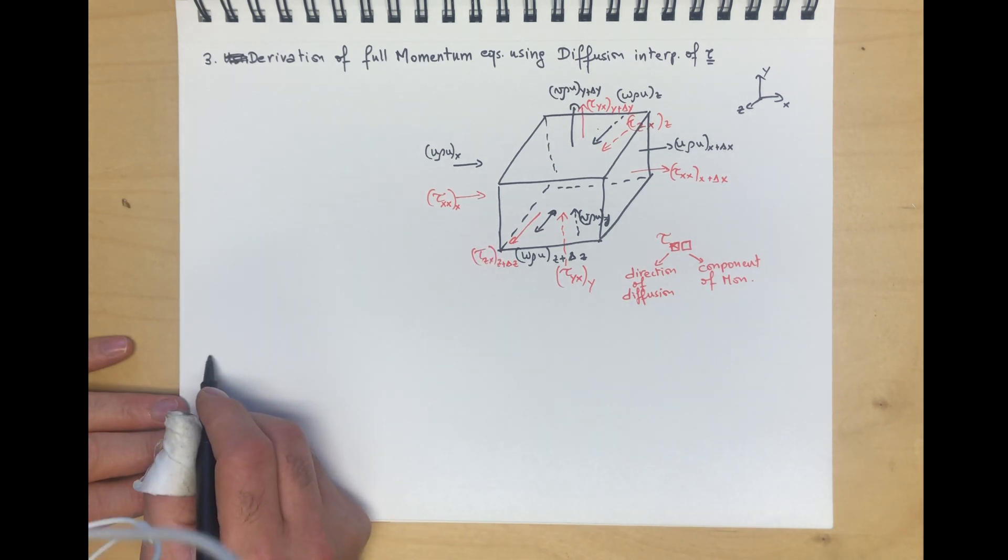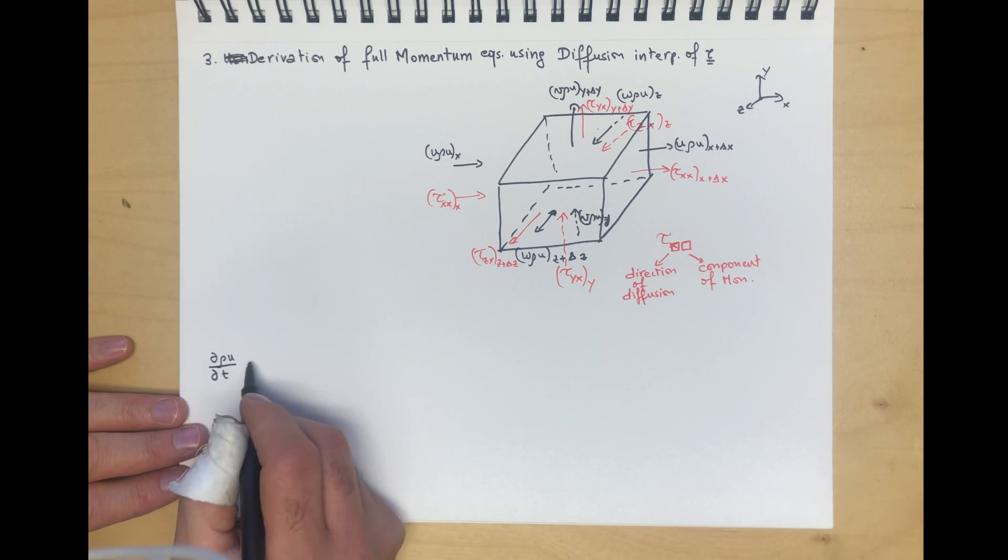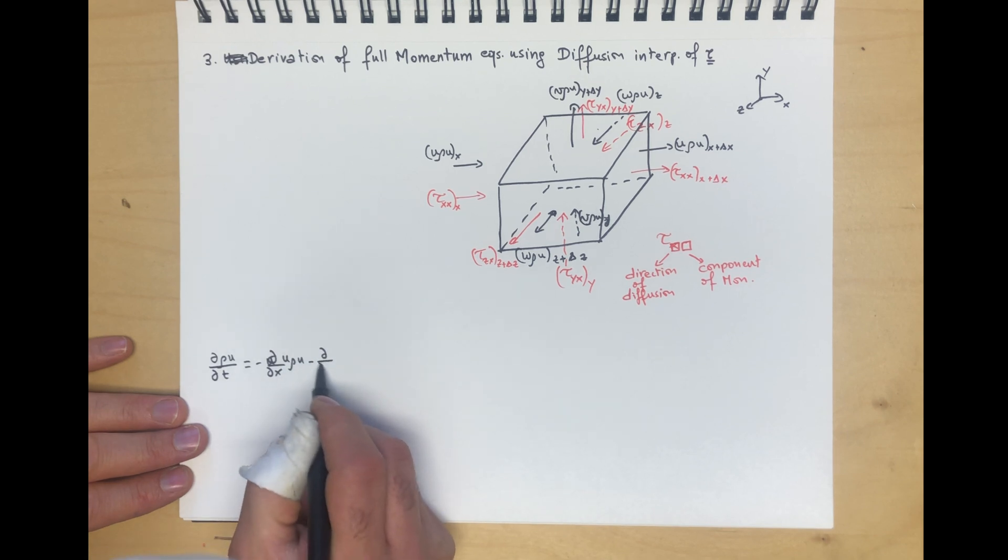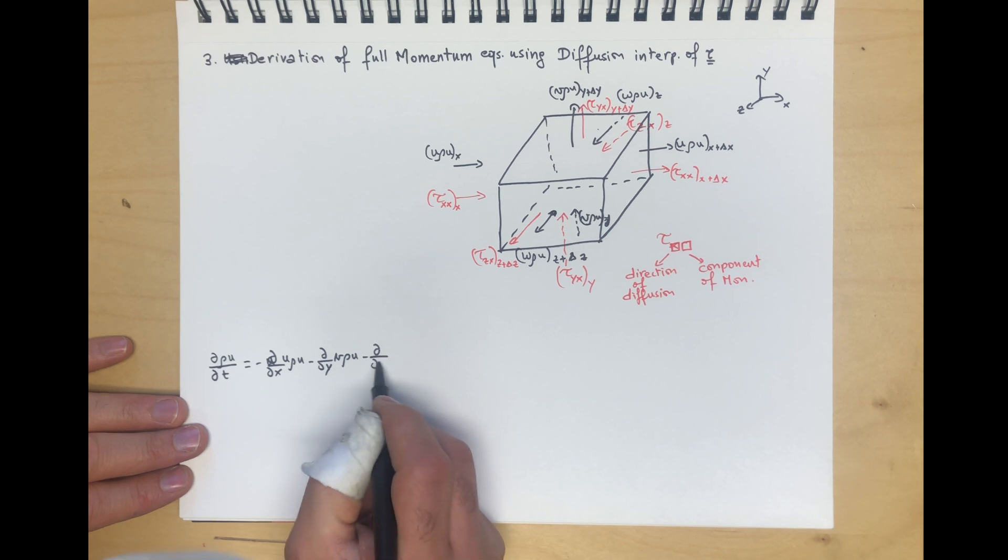In this case, we have d(ρu)/dt equals minus d/dx(u ρ u) minus d/dy(v ρ u) minus d/dz(w ρ u).